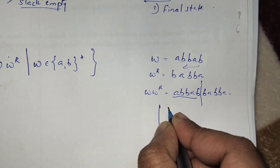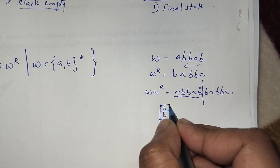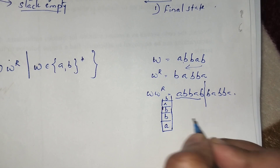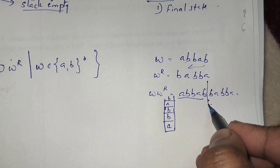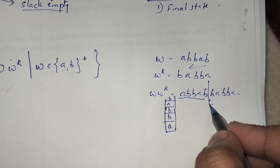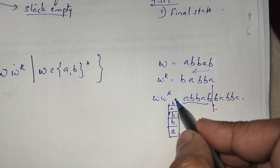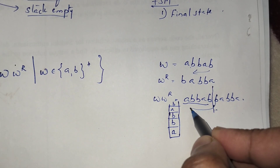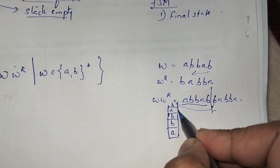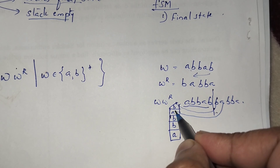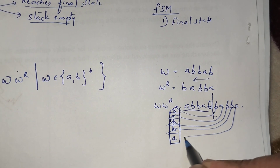Whenever I see a's I push to the stack, whenever I see b's I push to the stack. Then we need to know we've reached the middle, so we change the state — that is the only way. After changing the state, whenever we see b we pop b, whenever we see a we pop a, matching the reverse. That is how w w^r is accepted.